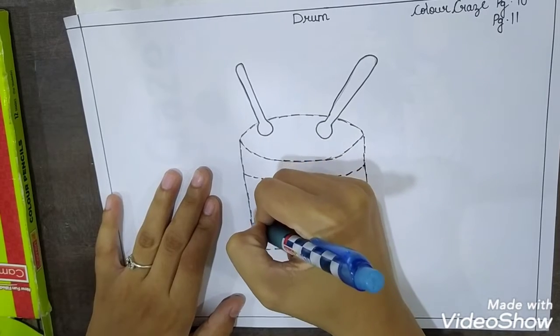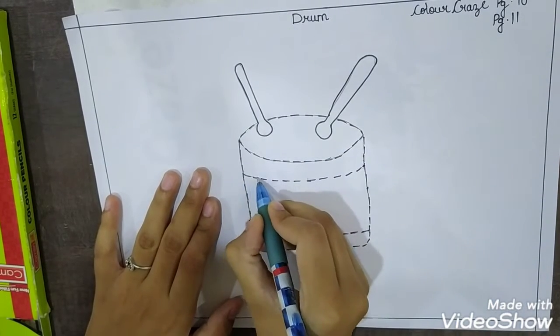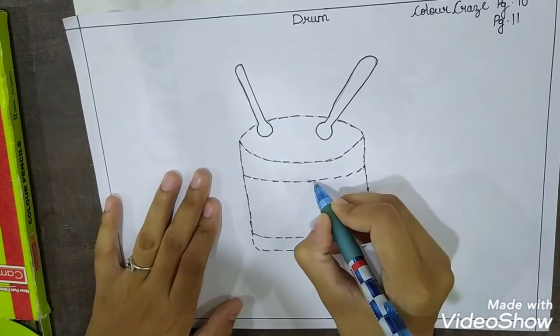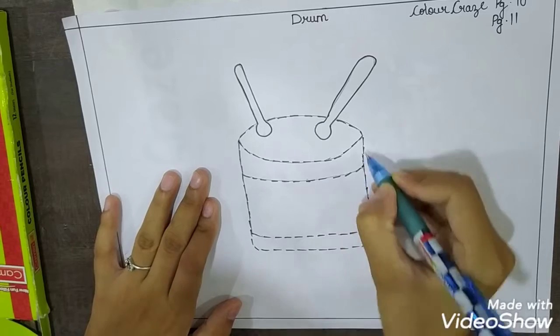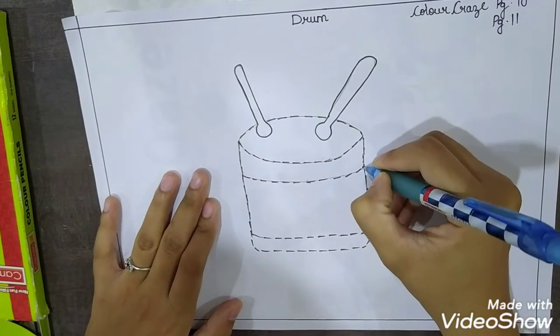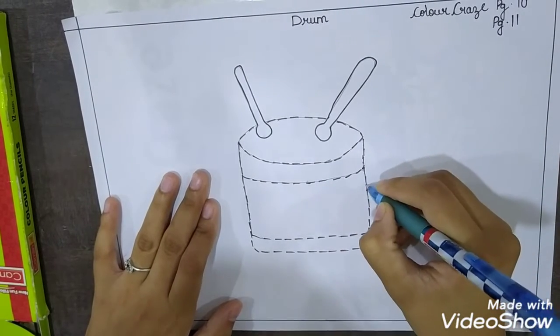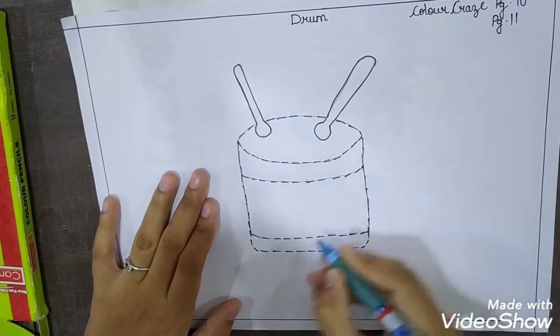So let's join this. Okay. The drawing which I am tracing is drum and it is in this way. It is in skill sheets in this way. Okay.